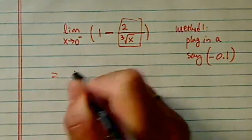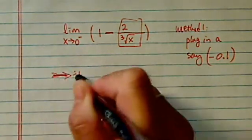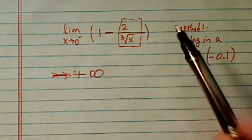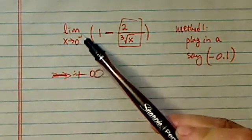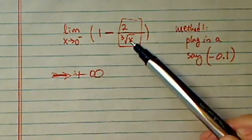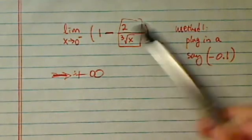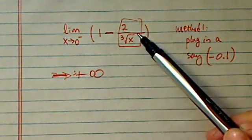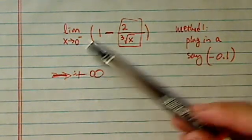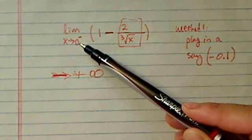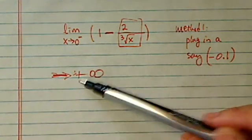So the answer to this one is approaches positive infinity. Once again, if it's negative, so minus 0.1, this chunk is a negative number. 1 minus a negative number becomes a positive number. As it gets closer to 0 from negative it's going to approach positive infinity.